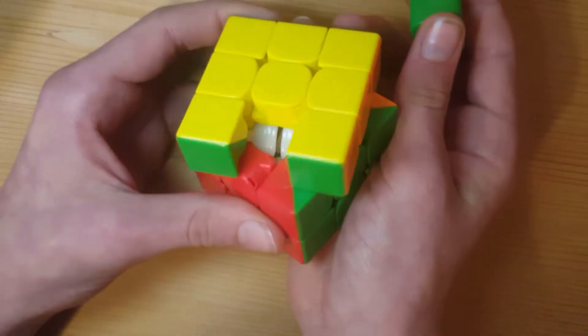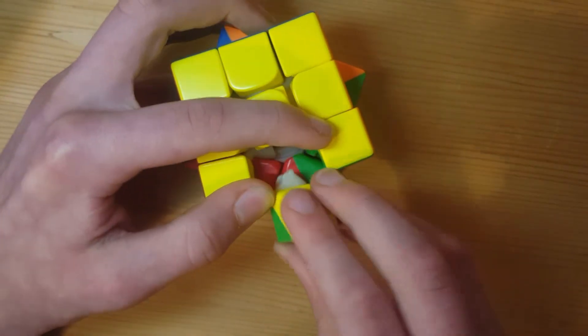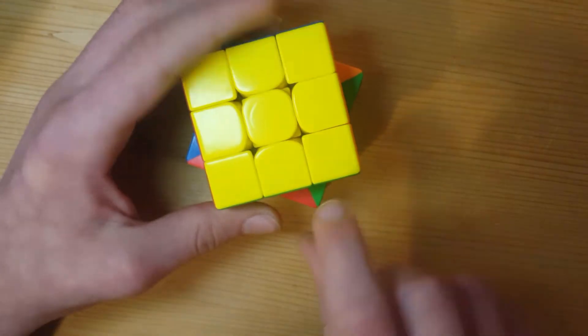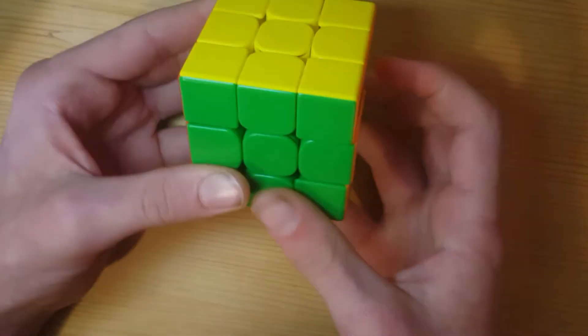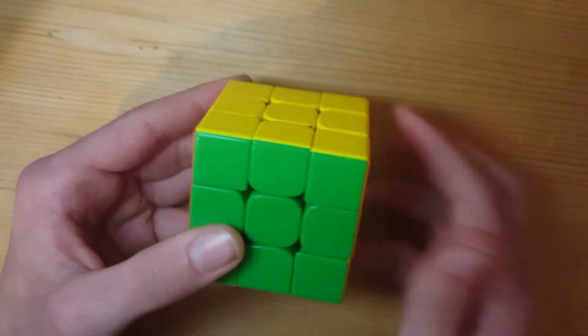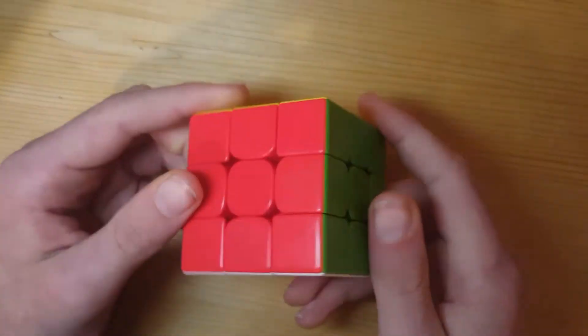So I'm gonna rotate it 45 degrees and I'm gonna pry this open and put it in the same way that we took it out. So just twist it and then put it in like that. And now the cube is reassembled.